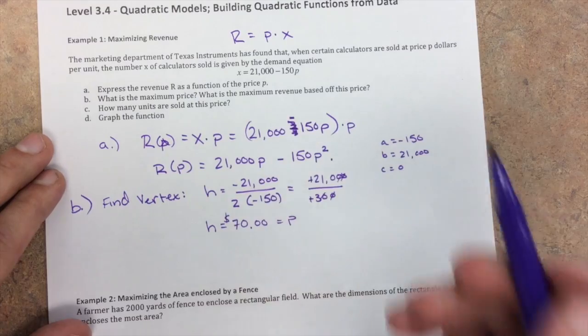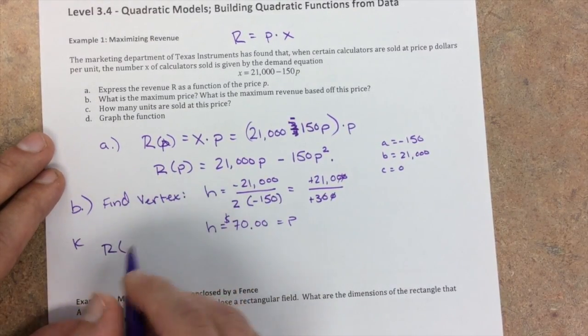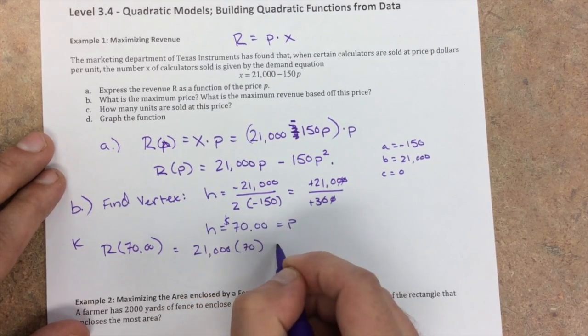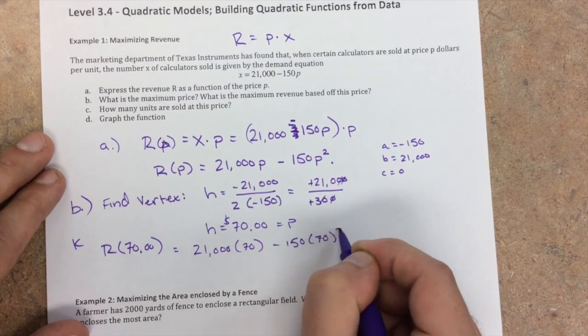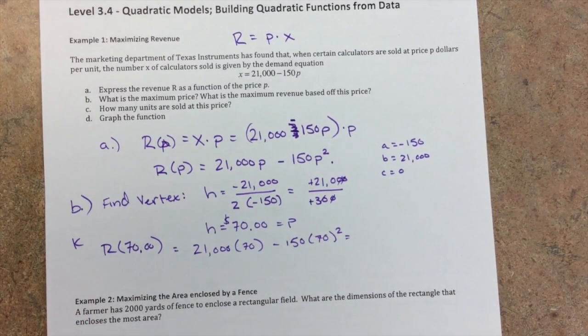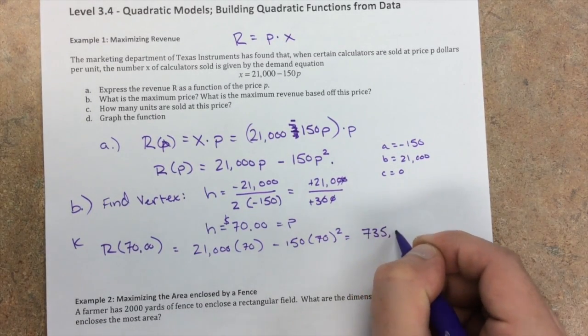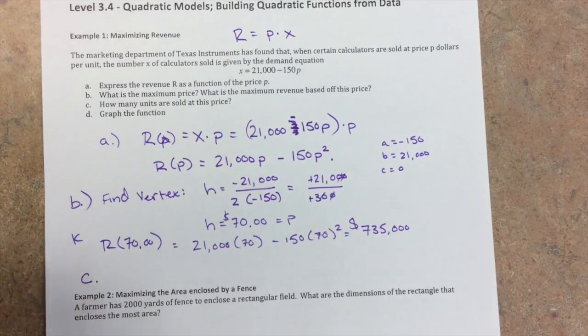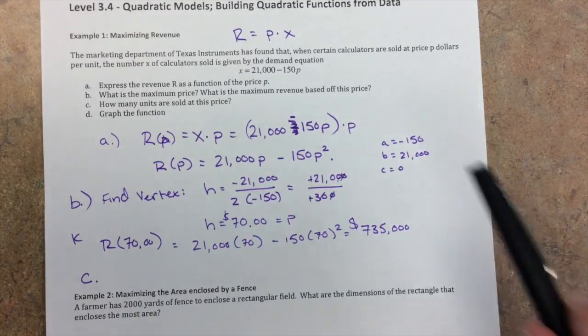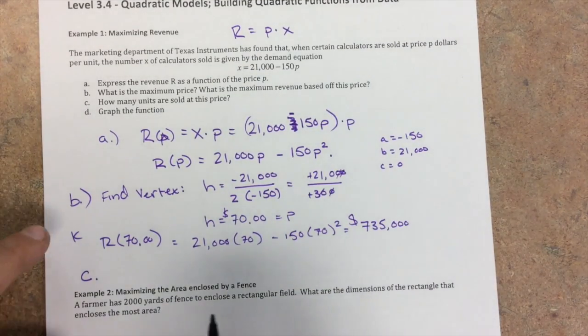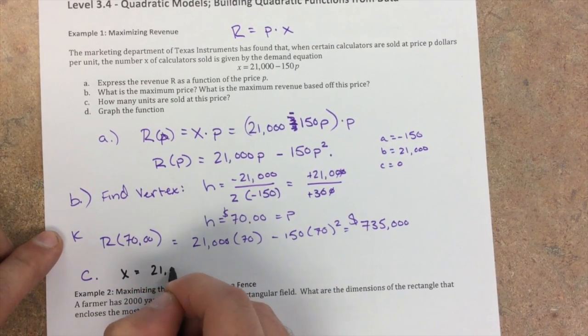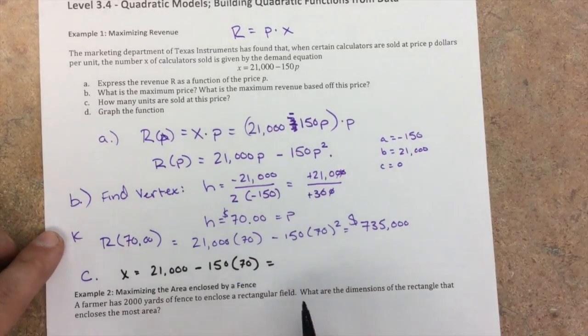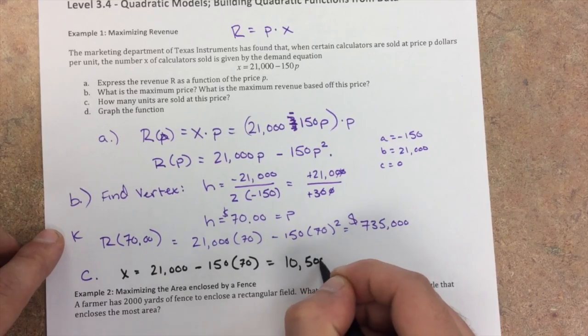What's the maximum revenue? Well, that's our K. So if you plug in 70 here, you get 21,000 times 70 minus 150 times 70 squared. Now if you type that into your calculator, you're going to get 735,000. How many units are sold at this price? Well, this is a different question, and the units sold is given by this X equation. So the number of units sold, X equals 21,000 minus 150 times 70. If we type this into our calculator, we're going to get 10,500 units.